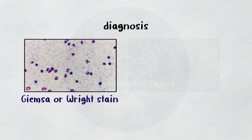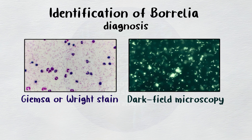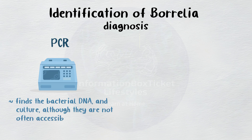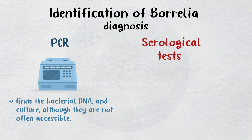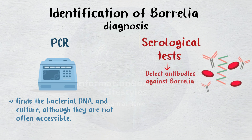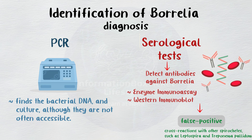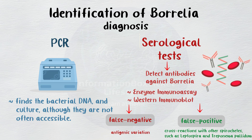Giemsa or Wright stain, dark-field microscopy, or identification of Borrelia on a peripheral blood smear are the methods used for diagnosis. Additional diagnostics include PCR, which finds the bacterial DNA, and culture, although they are not often accessible. Serological tests that detect antibodies against Borrelia, such as enzyme immunoassay and western immunoblot, can also produce false positive results due to cross-reactions with other spirochetes such as Leptospira, which causes leptospirosis, and Treponema pallidum, which causes syphilis. These tests can also produce false negative results due to antigenic variation.